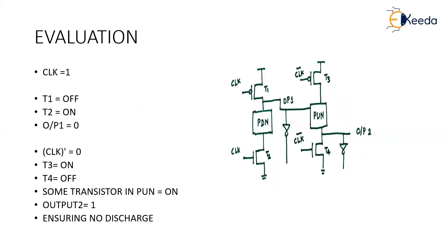When clock = 1, clock-bar becomes 0. T1 is OFF, T2 is ON, output 1 is 0. This 0 turns some transistor in the pull-up network ON, so output still maintains logic 1, ensuring no discharge. This works because there is no discharge path to ground — connecting a 1 directly to a pull-up network turns OFF the pull-up network. This logic is called NP-CMOS logic.